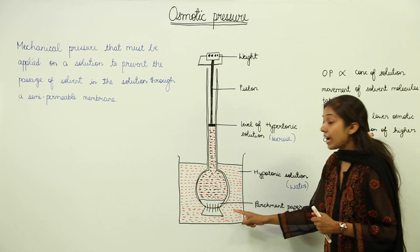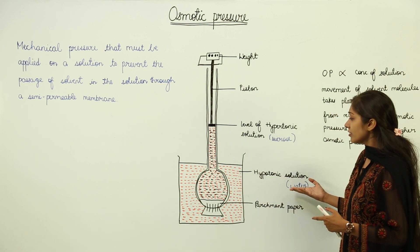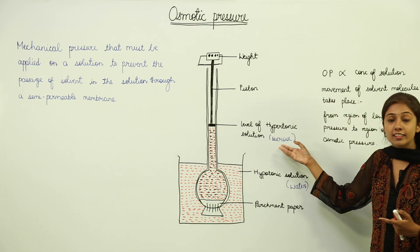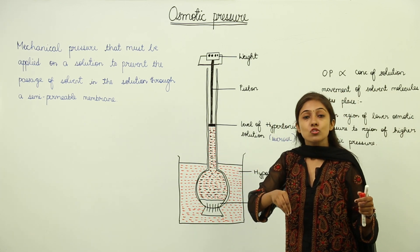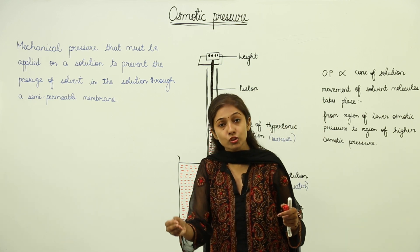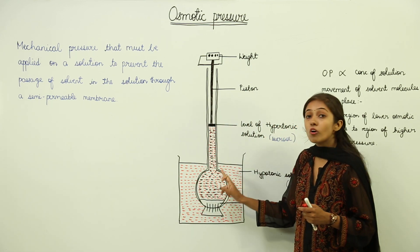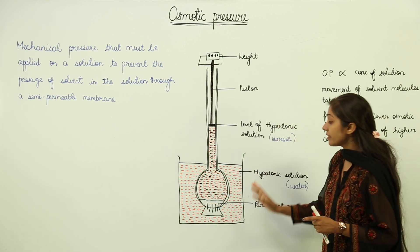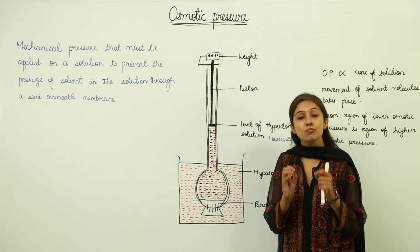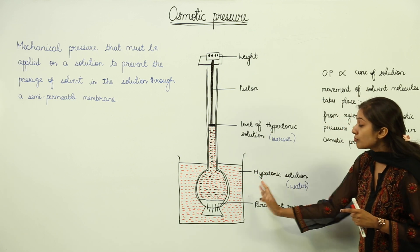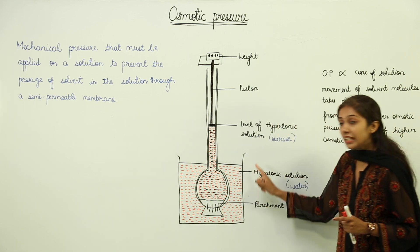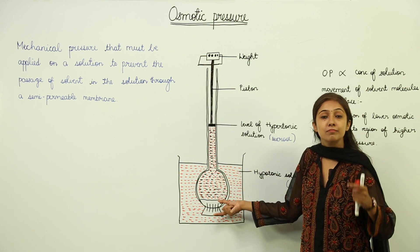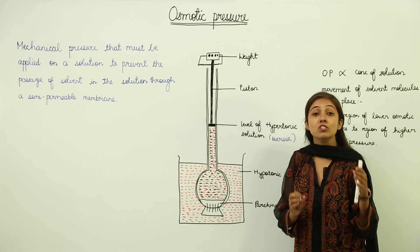Here in the beaker, we have water, so it is purely water and definitely it is going to be a dilute solution. And in this thistle funnel, we have sucrose — we have added sugar into water — so this is now a concentrated solution. In this case, the water molecules are going to be less as compared to the water molecules that are going to be there in the beaker. So, according to the osmosis process, there will be movement of water molecules from the beaker into the thistle funnel, and we have a semi-permeable membrane, so we are going to call this process as osmosis.